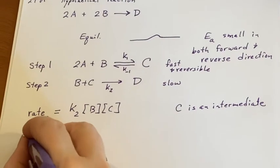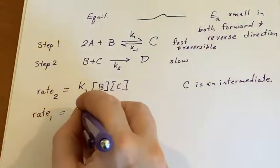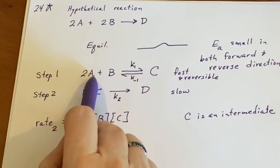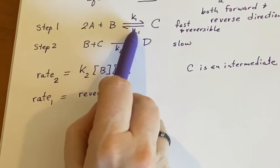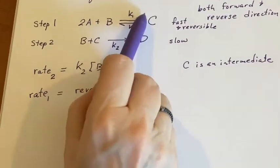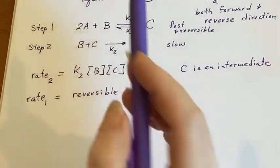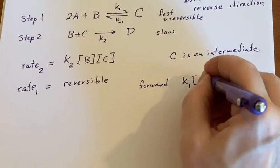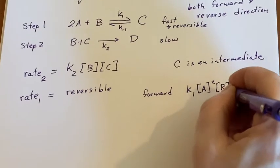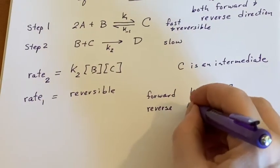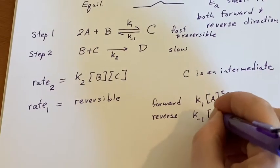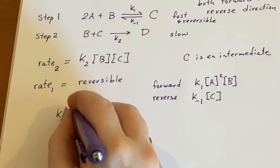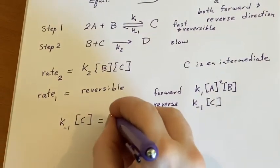I have to work harder on this because rate one is reversible. C is created by K₁ but depleted by K₋₁. If this has reached equilibrium, then the forward rate and reverse rate are the same. Forward would be K₁[A]²[B], and the reverse rate is K₋₁[C]. These are equal to each other.